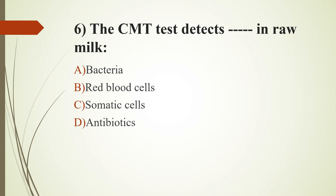Sixth question: the CMT test detects what in raw milk? Option A, bacteria; option B, red blood cells; option C, somatic cells; option D, antibiotics. CMT stands for California Mastitis Test. The answer is option C, somatic cells. The California Mastitis Test is a quick diagnostic tool for mastitis in dairy cows. The California reagent is mixed with milk, and the reagent reacts with the DNA of somatic cells to form a gel. Somatic cells are mainly made up of WBCs, and a high WBC count in milk strongly indicates mastitis-causing bacteria are present.